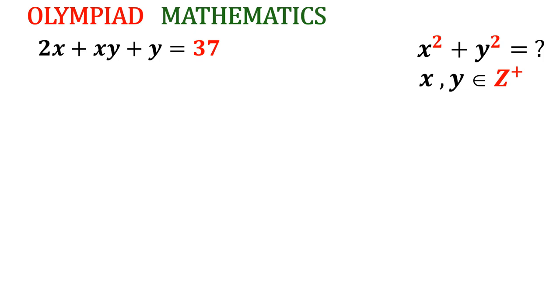We have 2x plus xy plus y equal to 37, where x and y are given as positive integers. We have to find x square plus y square.